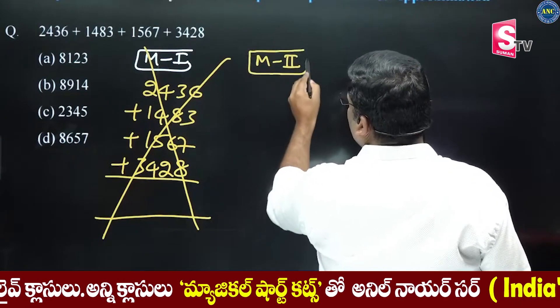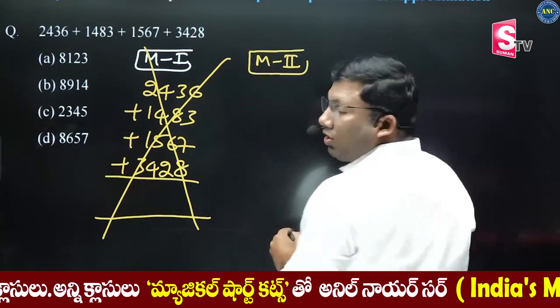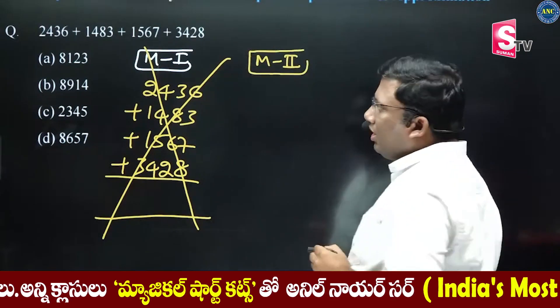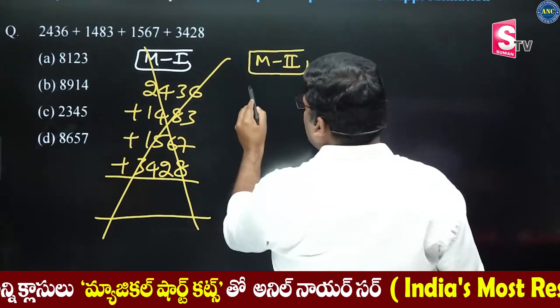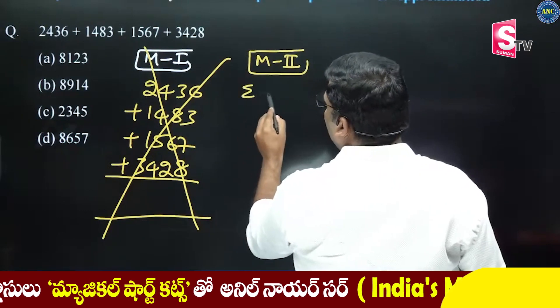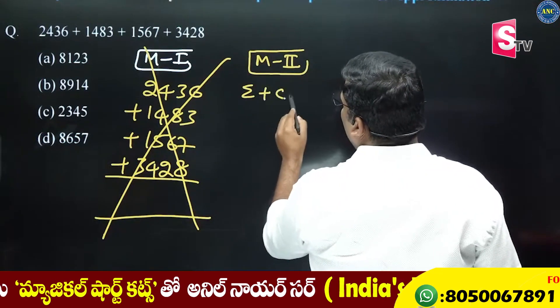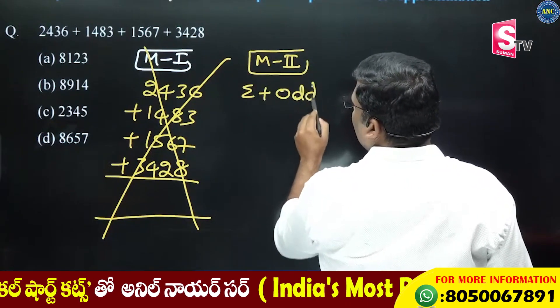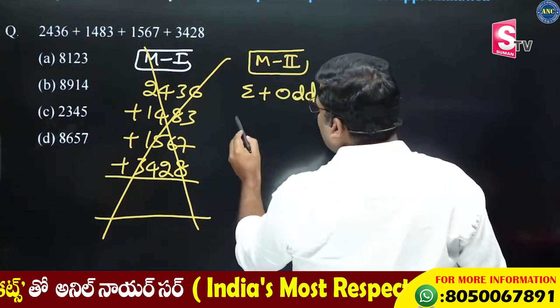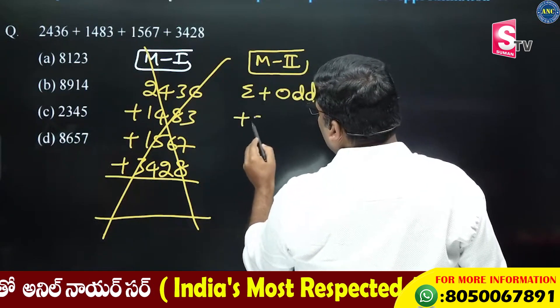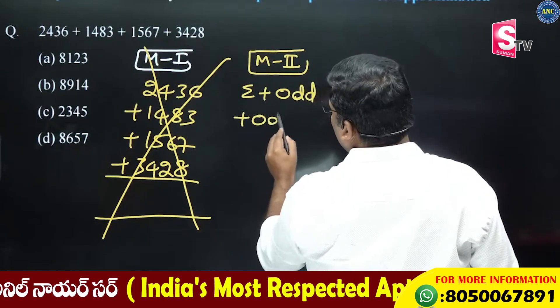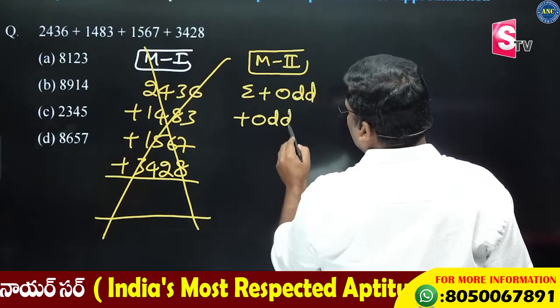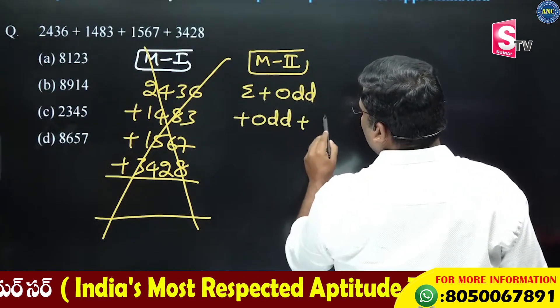First, one question. The question involves 2436 — even number. 1483 — odd number. Are you all with me? 1567 — odd number. 3428 — even number.